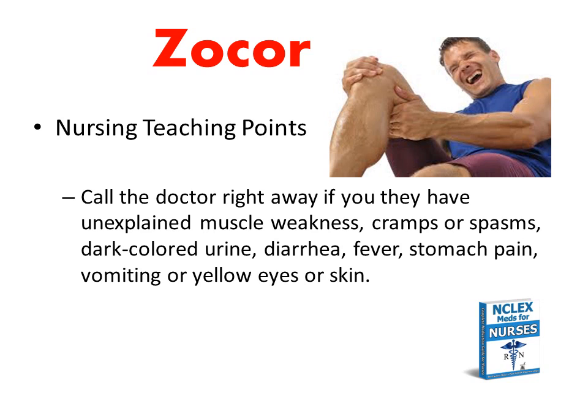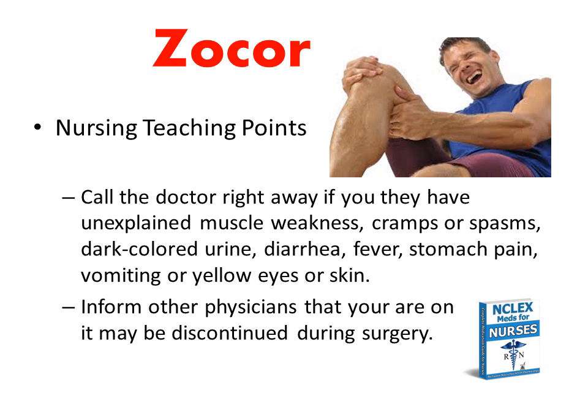Instruct patients to call their doctor right away if they experience unexplained muscle weakness, which could indicate myopathy; muscle cramps or spasms; dark-colored urine; diarrhea or fever, which can be due to rhabdomyolysis and can cause kidney problems; stomach pain; vomiting; or yellow eyes or skin, which can indicate liver damage.